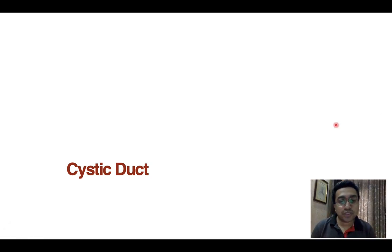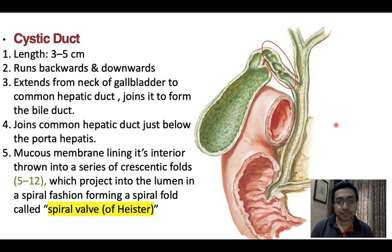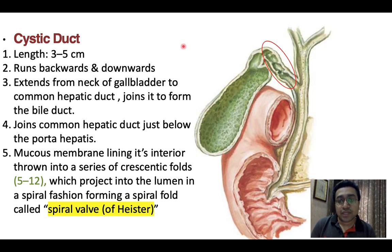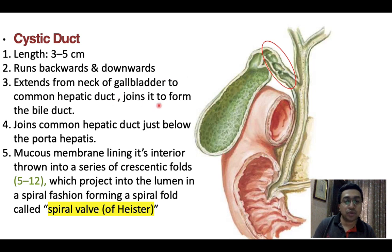We start with the cystic duct. The cystic duct is 3 to 5 centimeters in length. As we can recall from the previous lecture diagrams, this highlighted region is the cystic duct. It runs backwards and downwards, extending from the neck of the gallbladder to the common hepatic duct, joining it to form the bile duct just below the porta hepatis.